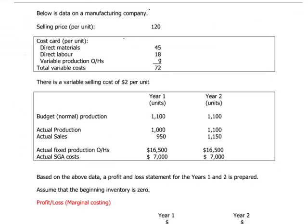Let's start with a scenario. Here we have a manufacturing company that produces a unit that sells for $120. The costs of production for this item are presented here. Direct materials, direct labor, and variable production overheads add up to $72. There's also a variable selling cost of $2 per unit. The budgeted level of production is 1,100 units for the next two years. However, the actual output and sales levels vary, and at the end of the given periods we also have actual fixed production overheads and selling, general, and administrative costs shown here.